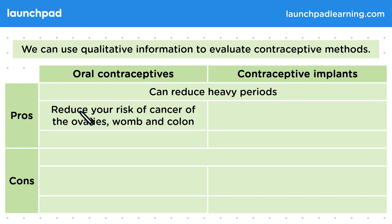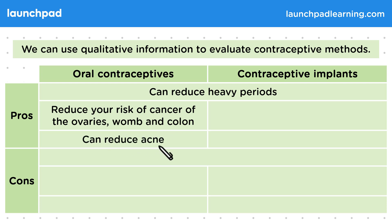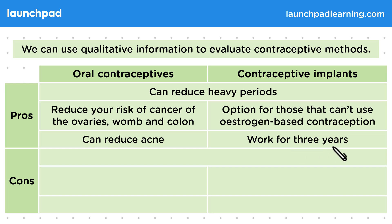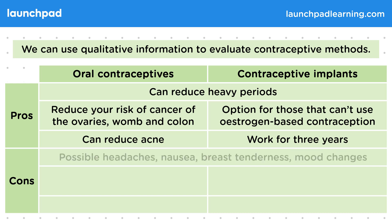A pro of oral contraceptives is that they reduce your risk of cancer of the ovaries, womb and colon, and can also reduce acne. Some pros of contraceptive implants are that they are an option for those who can't use oestrogen-based contraception, and they work for three years.